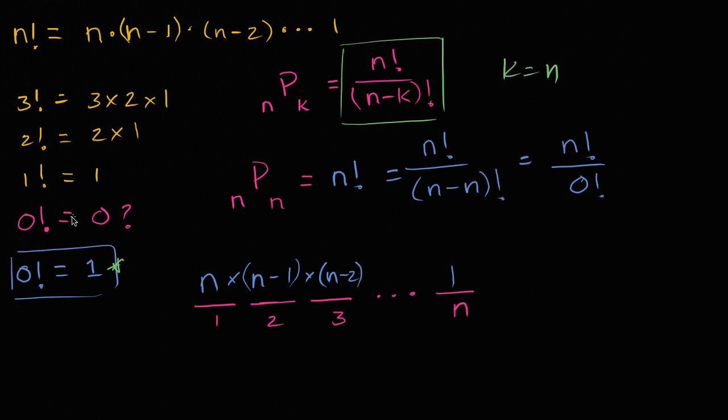For zero, we're just going to make a mathematical definition. We're just going to say zero factorial is equal to one. And it's actually quite useful.